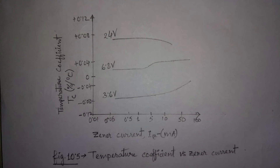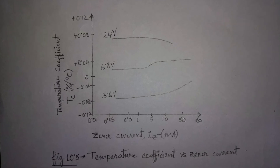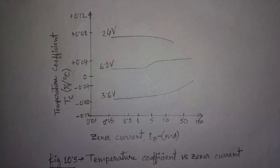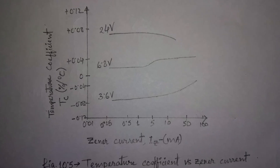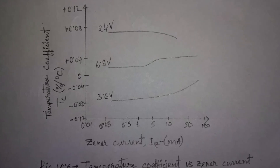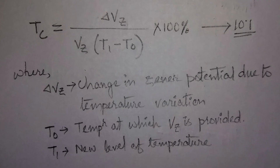Now we will consider the temperature effects. The temperature coefficient of Zener diode reflects the percentage change in Zener potential, delta VZ, versus its temperature. It is defined by equation 10.1, where delta VZ is the resulting change in Zener potential due to temperature variation. T0 is the temperature at which VZ is provided, generally 25 degrees Celsius. T1 is the new level of temperature.